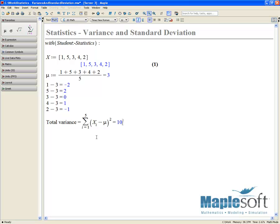So in this case, the total variance of our data set of all the values is going to be equal to 10.